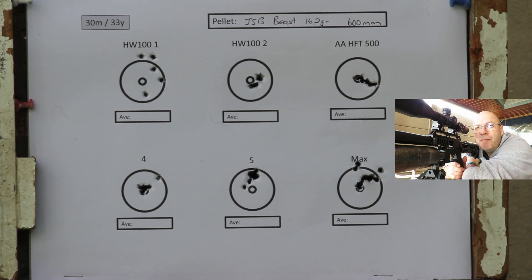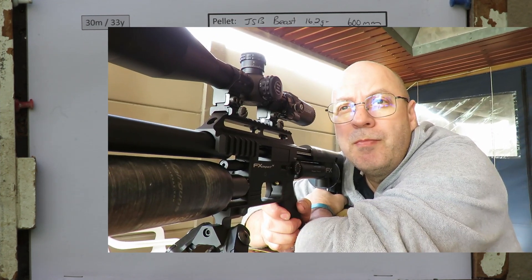All right, that was very interesting. On power setting two, three, and four—immaculate groupings. You've probably seen the speed there, but I'll show you guys on the summary as well what the speeds were for that. That was quite impressive. Power setting five, one flyer, and then on power setting six it started to open up. But the Beasts were a heck of a lot better at 30 foot-pound than the Monsters or the normal heavies.